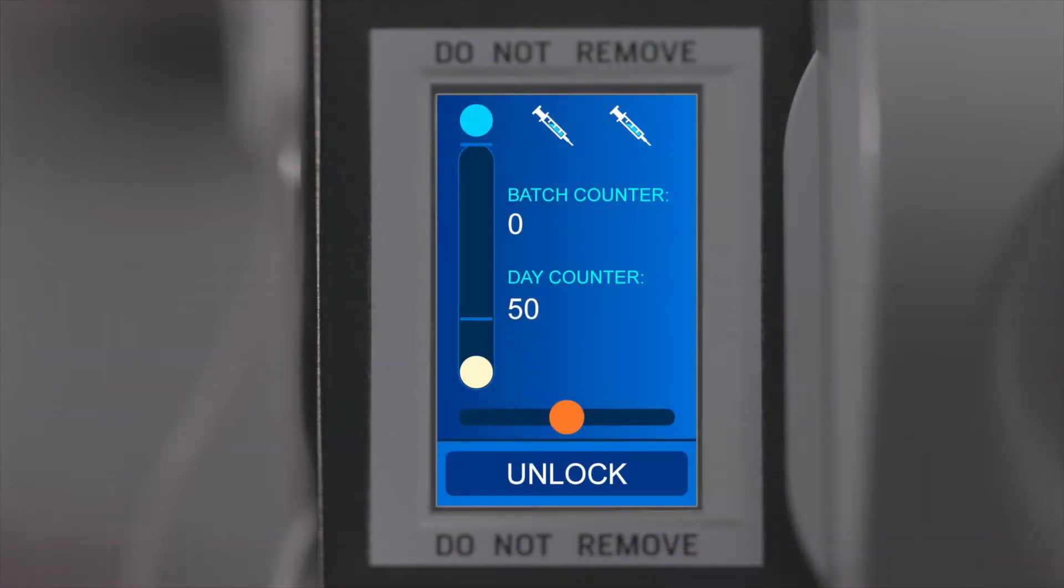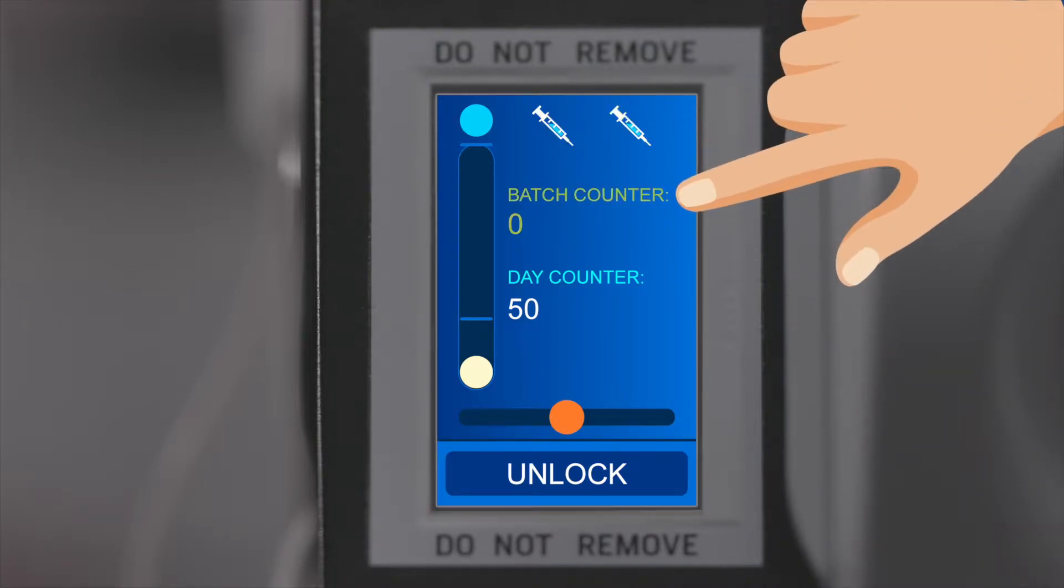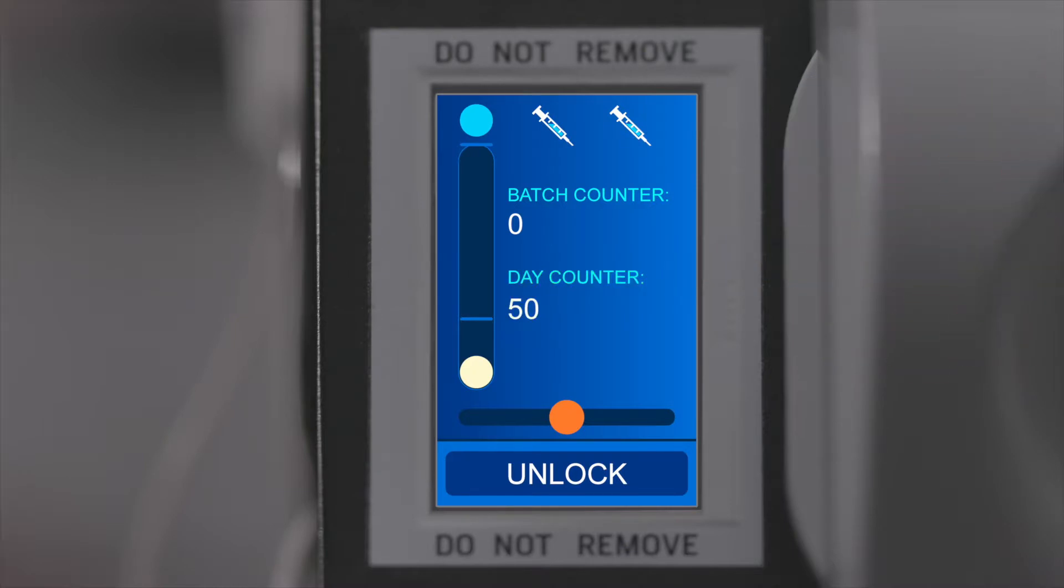The home screen shows basic information like how many syringes are in use, a batch counter and a day counter. It also indicates the correct positioning of a chicken. Hold Unlock for two seconds to access settings.